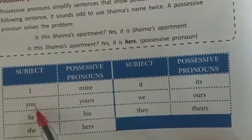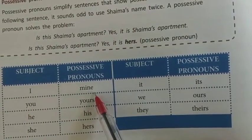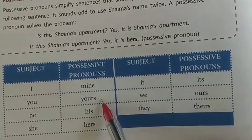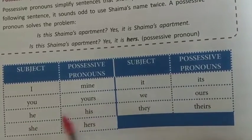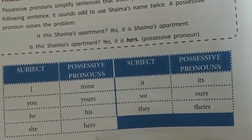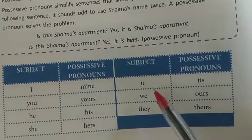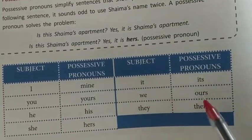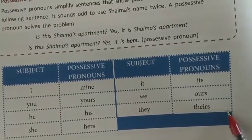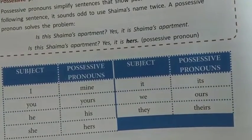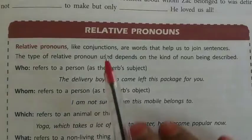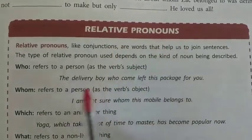The possessive pronoun table: Subject I → mine; you → yours; he → his; she → hers; it → its; we → ours; they → theirs.